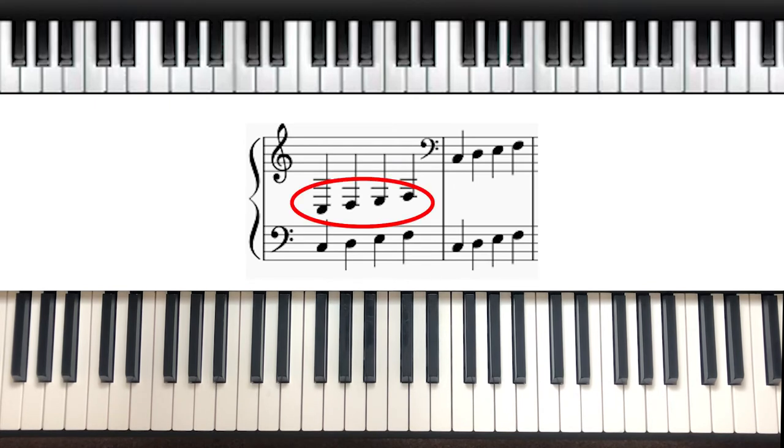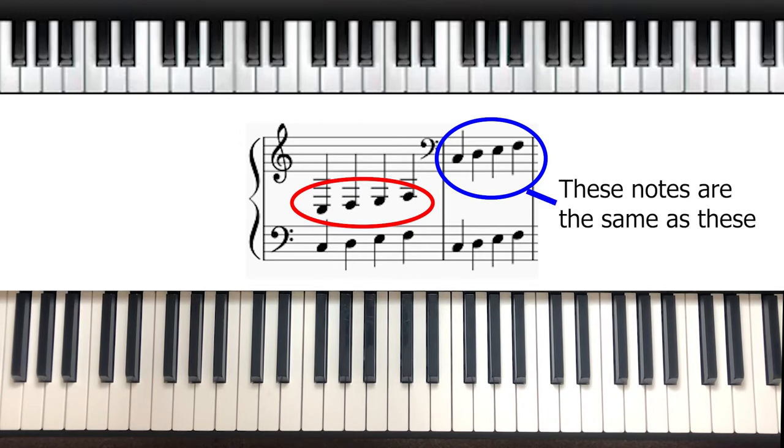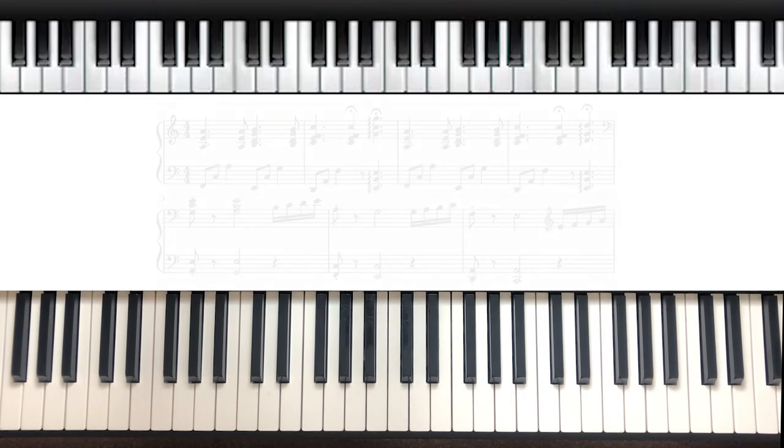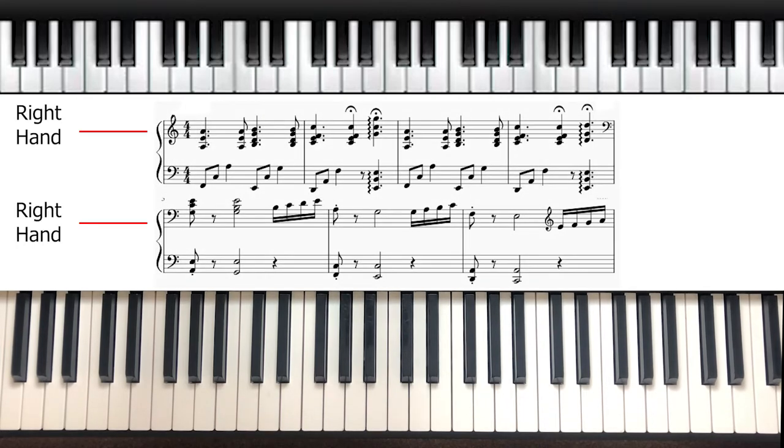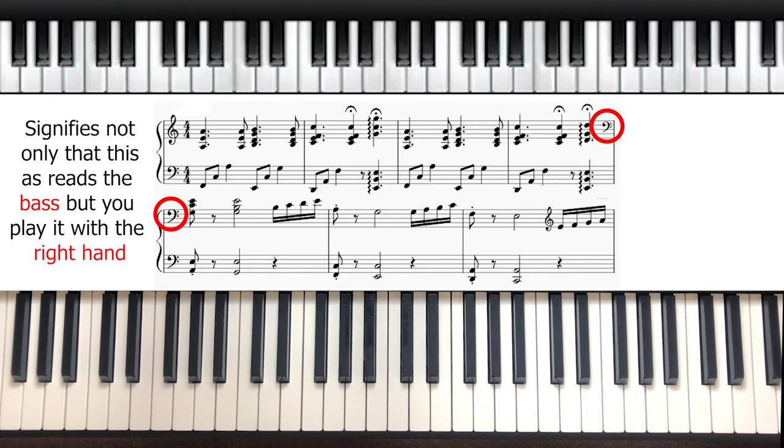So these ledger line notes would actually be written here instead. Yes, the notes written here are exactly the same as these notes. It will take some getting used to, but I can show you a little sequence to help you out. Remember that the top stave is mainly for your right hand and the bottom is mainly for the left hand. So it makes sense when we add the bass clef to the top stave because it signifies not only that you need to read it as the bass clef, but you have to play it with the right hand.